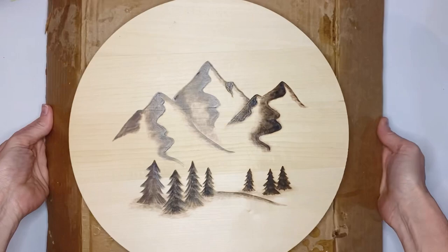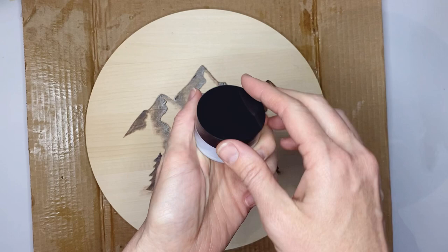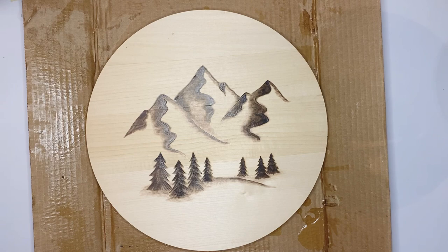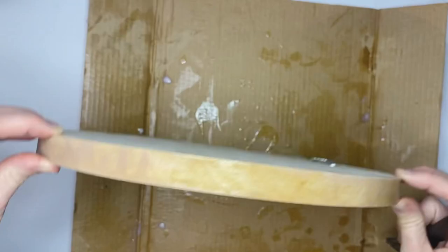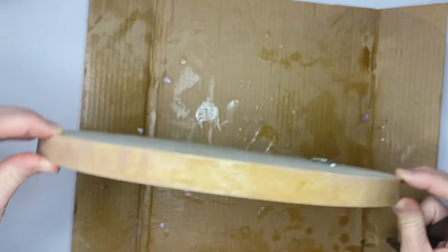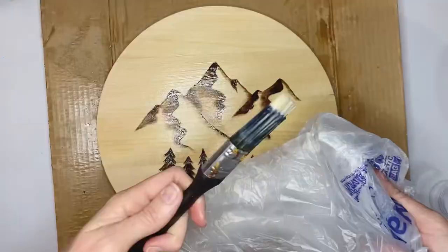Now it's time to add the sealant. I'm going to put down a little piece of cardboard just to protect the surface. Then I'm going to open up my polycrylic sealant. I'm going to use my paintbrush to stir it up and then apply the first coat. I like to wrap my brush in a plastic bag so that I can just use it again without having to rinse it out between coats.